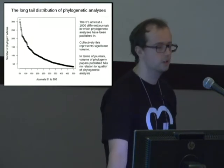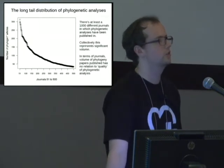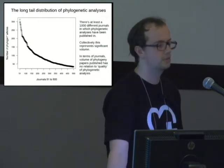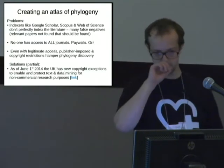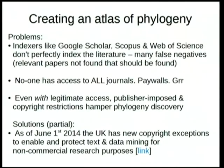We really need to develop tools to extract this from the literature if we're going to test against previous hypotheses. There are various other problems: indexes sometimes don't actually index the full text, so you may not even know there's a phylogenetic analysis in the paper. And no individual academic has access to all journals, given the huge long tail.